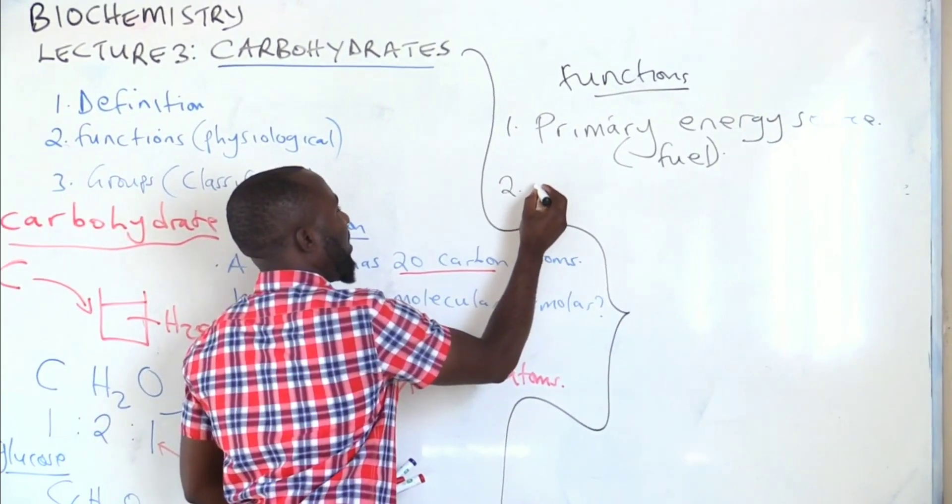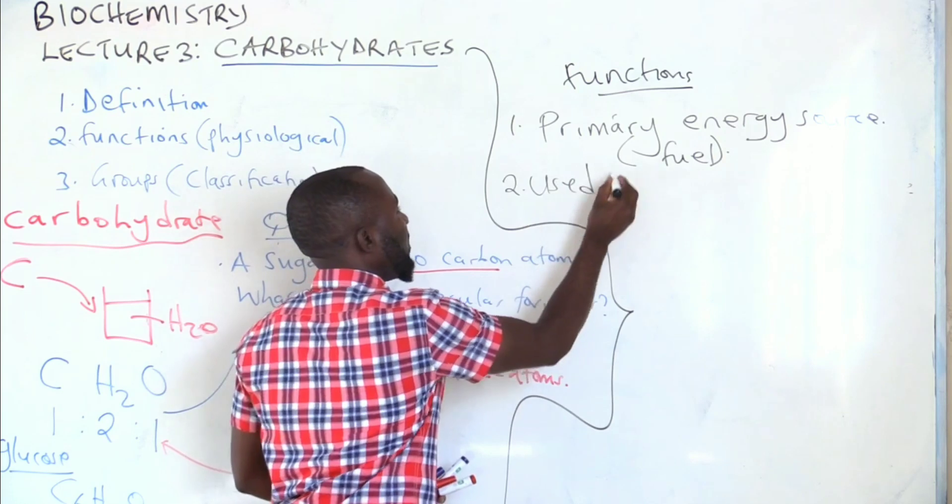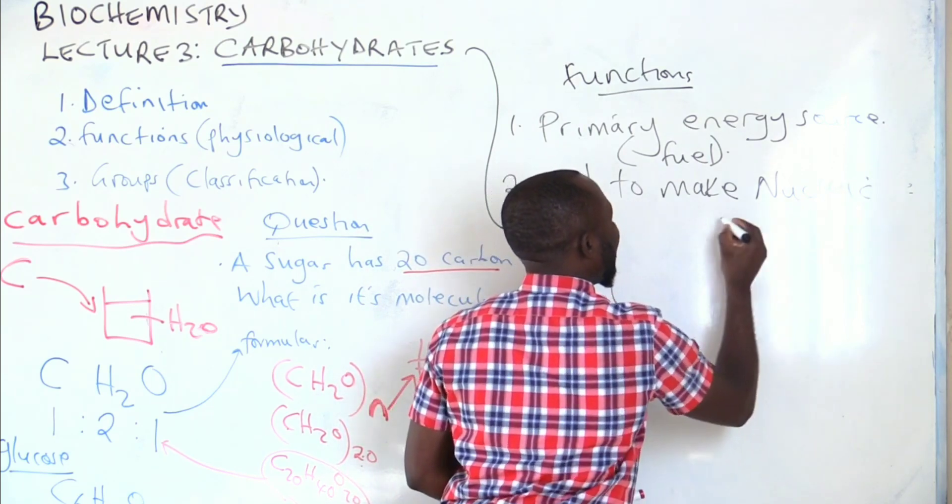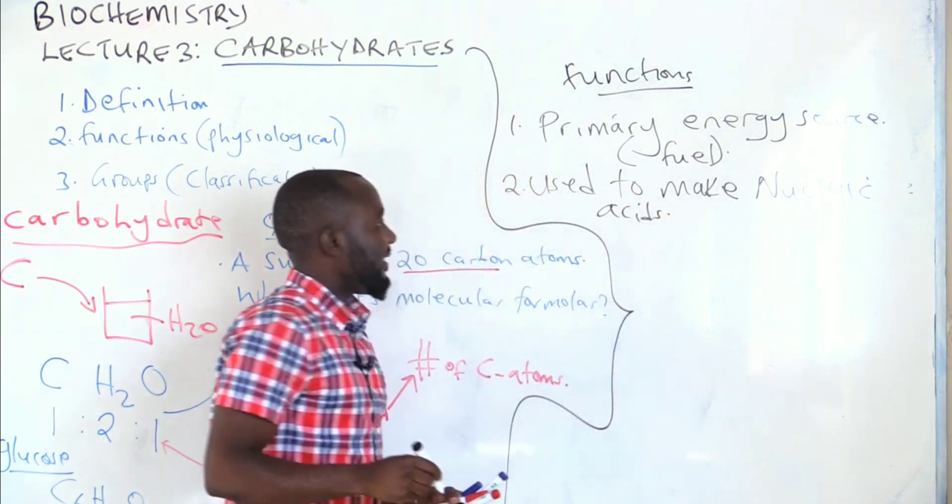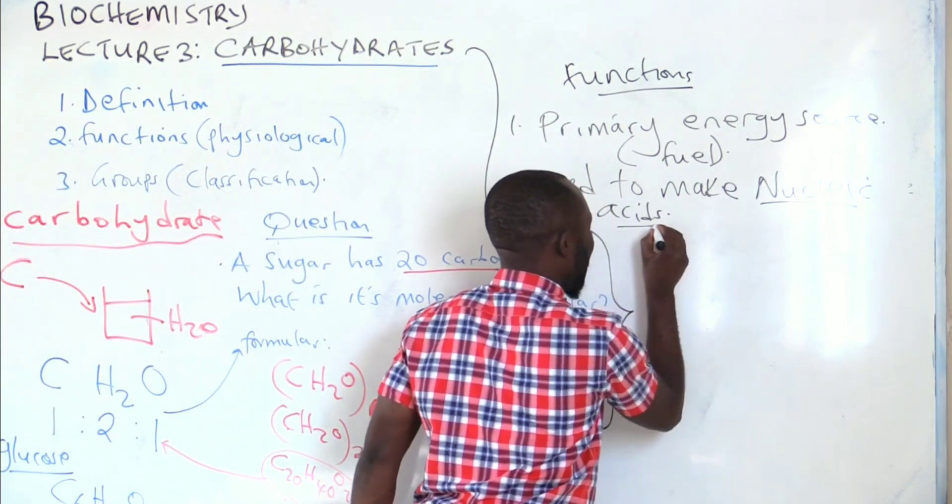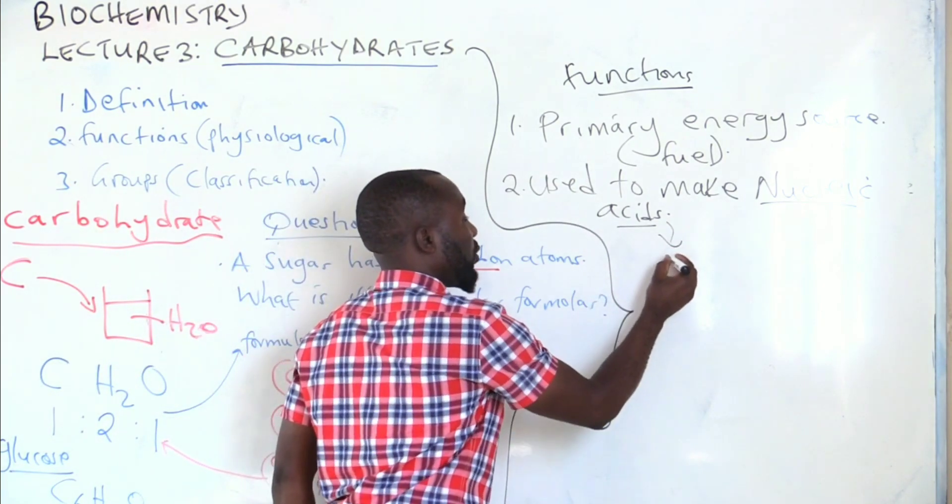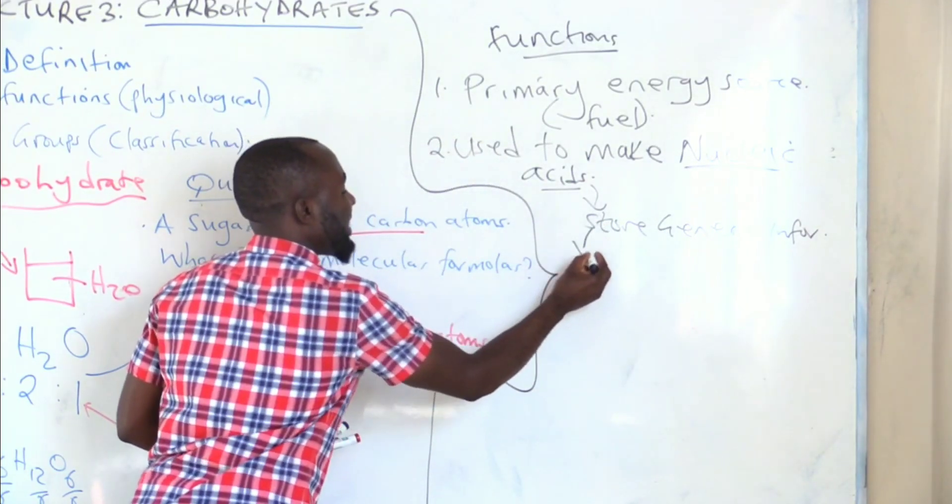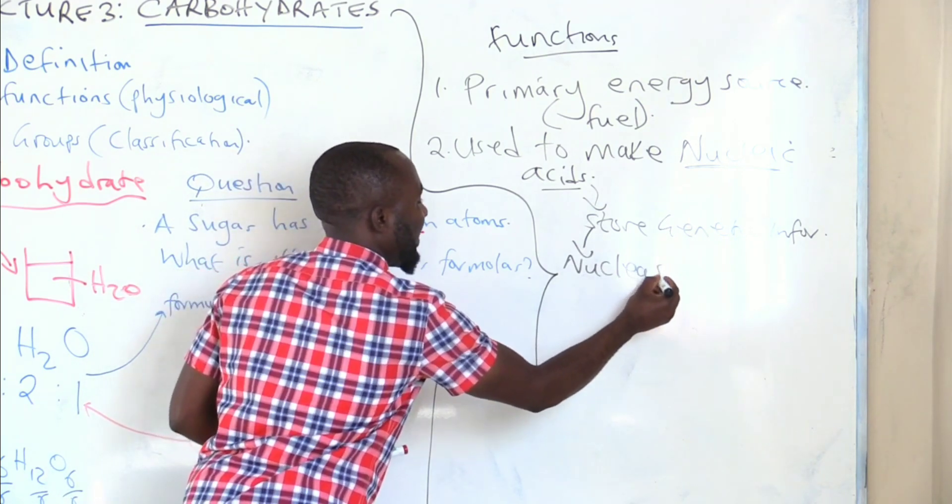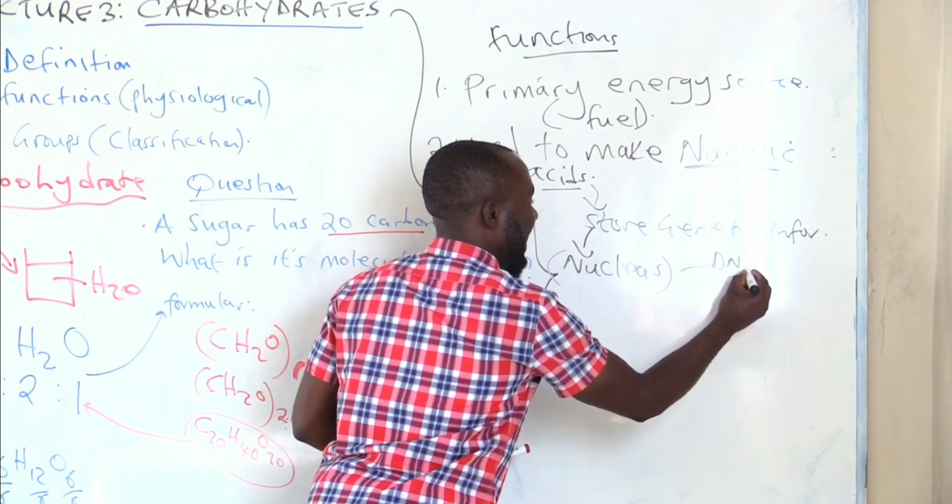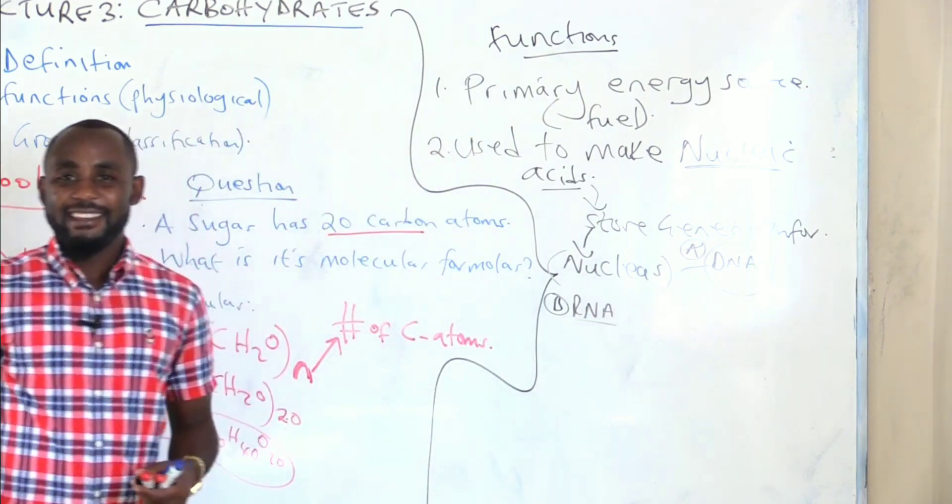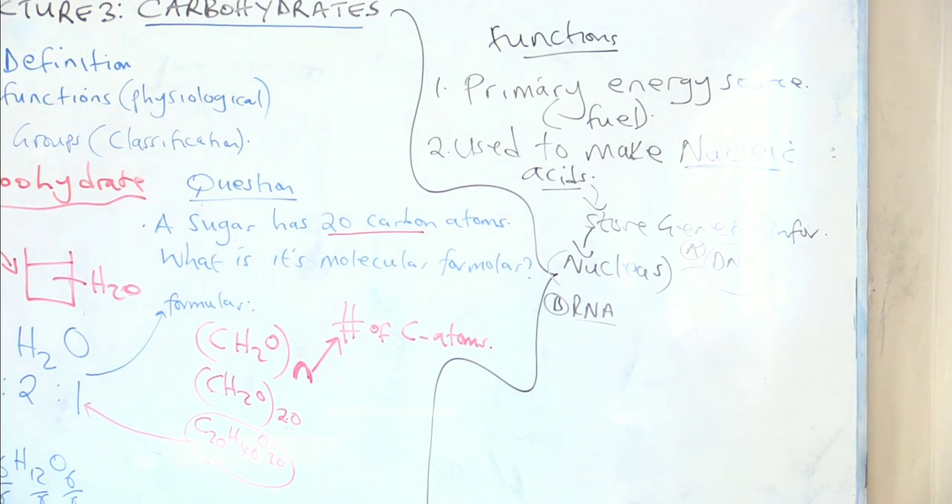Number two, carbohydrates are used to make nucleic acids. What are nucleic acids? These are molecules that tend to store genetic information. This nucleic acid is normally found in the nucleus. There are two types: DNA, number one; RNA, number two. They store genetic info.